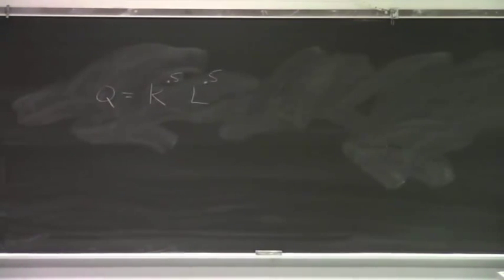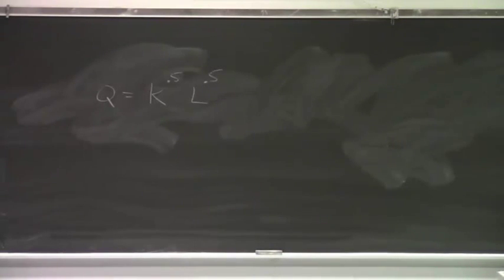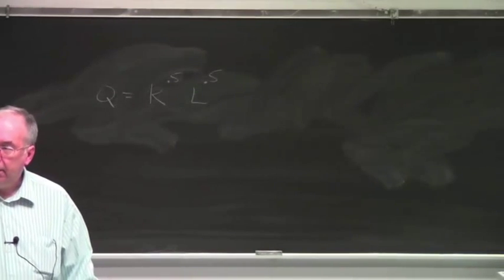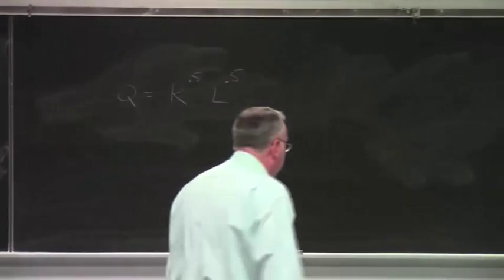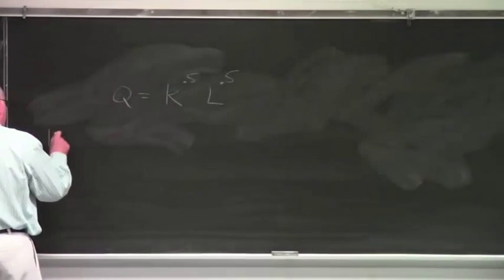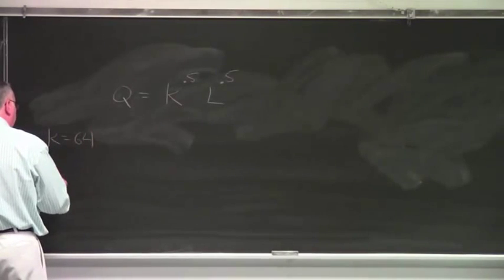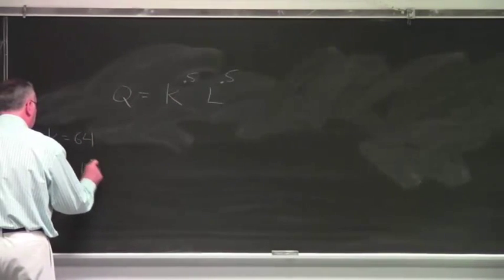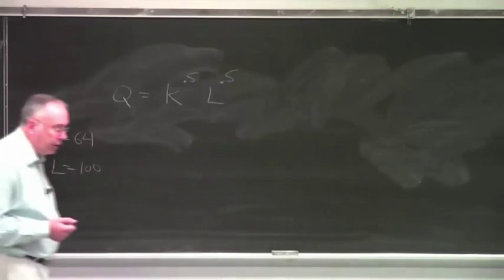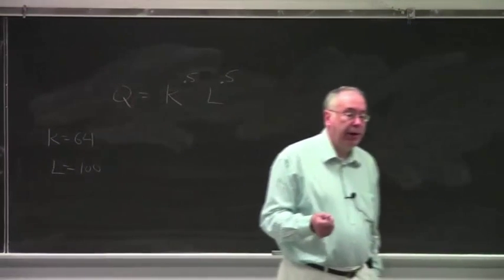And suppose we want to evaluate the marginal product of labor when K is equal to 64 and L is equal to 100. How would we do that? Let K be equal to 64. Let L be equal to 100. For these values of K and L, evaluate the marginal product of labor. Find the marginal product of labor. What is the marginal product of labor?